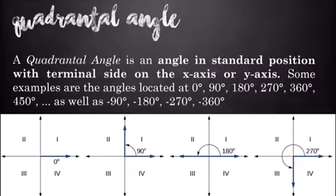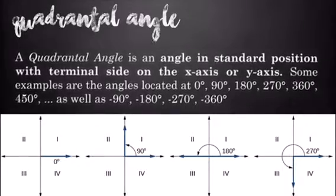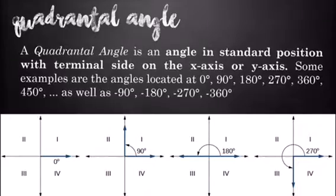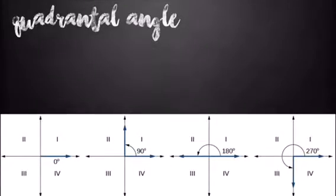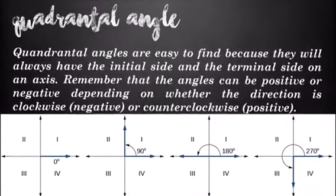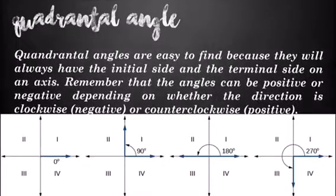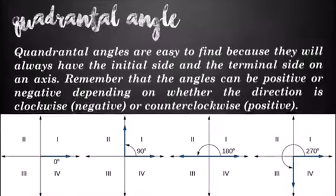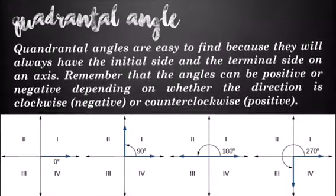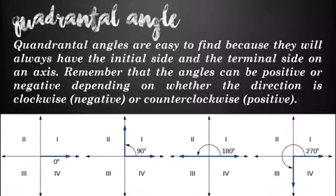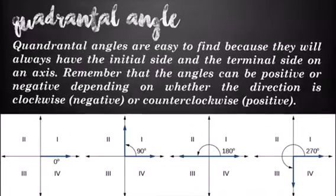As well as negative 90 degrees, negative 180 degrees, negative 270 degrees, and negative 360 degrees. Quadrantal angles are easy to find because they will always have the initial side and the terminal side on an axis. Remember that the angles can be positive or negative depending on whether the direction is clockwise negative or counterclockwise positive.